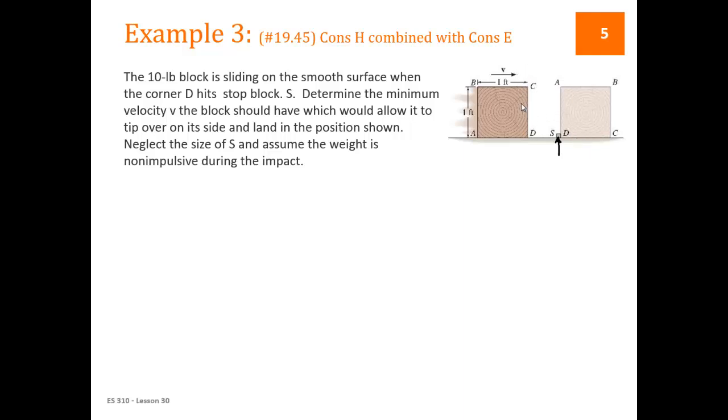And our third example, we're getting a little bit more complicated. And what's happening is we have a block that's sliding along the surface, and it hits this little box at S, and it tips over it and lands on the other side. And we're supposed to figure out how fast does it need to be moving at a minimum for this to happen. And so there's two sections of this problem that we're going to look at. First, the box is going to hit S and start tipping. That's a conservation of momentum problem.